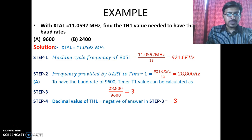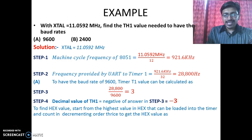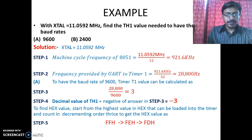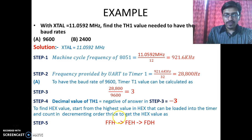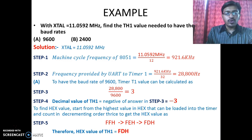Now if we want the corresponding hex value, we start from the highest value in hex that can be loaded into TH1, which is FFH, and count down three times: FFH, FEH, FDH. So FDH is the hex value that is required to be loaded into TH1 to have a baud rate of 9600. In this way we can calculate the value required to be loaded into TH1 to have the corresponding baud rates.